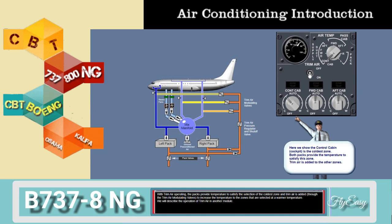With trim air operating, the packs provide temperature to satisfy the selection of the coldest zone. Trim air is then added through the trim air modulating valves to increase the temperature to the zones that are selected at a warmer temperature.